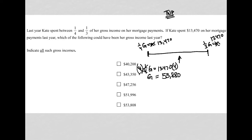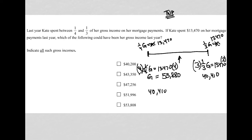On this end of the spectrum, I have a very similar equation with one-third instead of one-fourth: one-third G equals $13,470. Multiplying both sides by three, $13,470 times three equals $40,410. So the range for her gross income is between $40,410 on the low end and $53,880 on the high end.